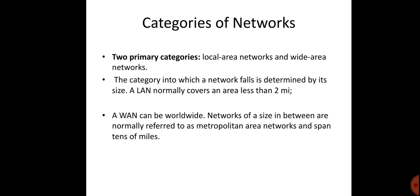A Local Area Network is usually privately owned and links devices in a single office, building, or campus. Depending on the needs of an organization, a LAN can be as simple as two PCs and a printer in a home office, or it can extend throughout a company and include voice, sound, and video peripherals. Currently, a LAN is limited to a few kilometers.